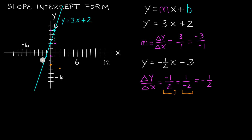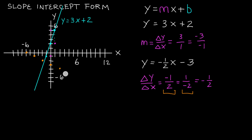We could have started at that new point and gone positive 1 and negative 2 in x, which would bring us back to our original point. We can keep going: up 1 unit in y, then negative 1, negative 2 units in x brings us to another point. Doing it one more time — up 1, over 1, 2 — gives another point. Going the other direction, we use the first slope representation: down 1 in y and over 1, 2 in the x direction.